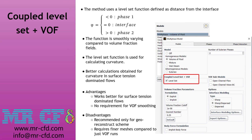Another modification to the VOF model is the level set method. This method uses a level set function defined as the distance from the interface, which varies smoothly compared to conventional volume fraction fields, providing better resolution. It is mostly used when modeling curved interfaces in surface tension dominated flows and does not require the VOF smoothing procedure. However, this modification is recommended only for the geo-reconstruct scheme and requires finer meshes compared to the standard VOF model.